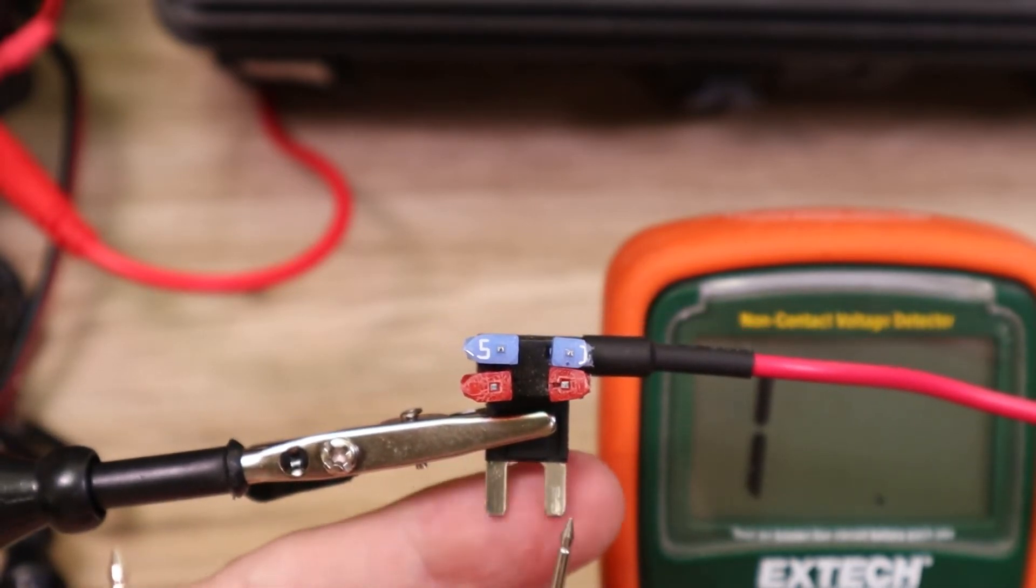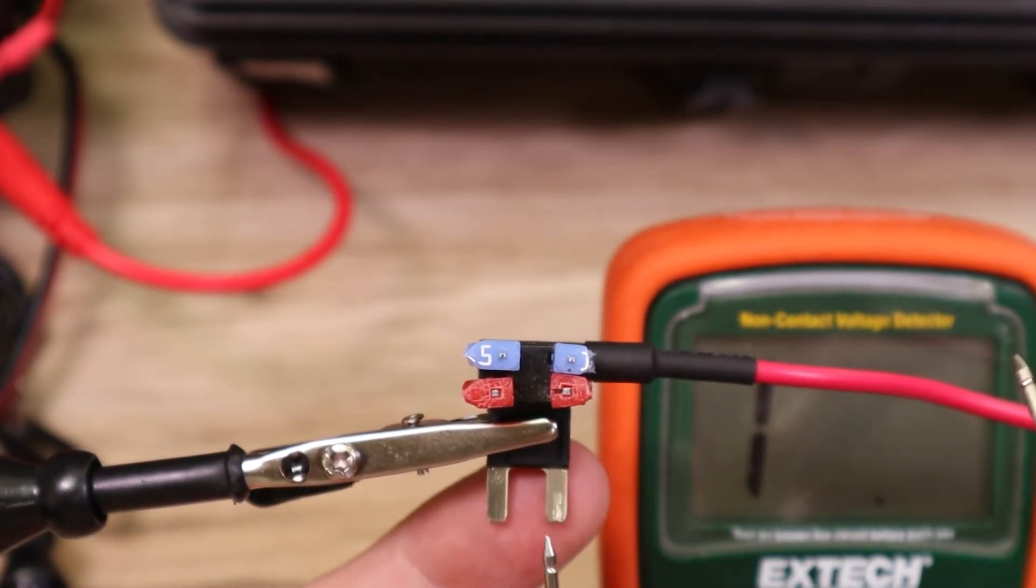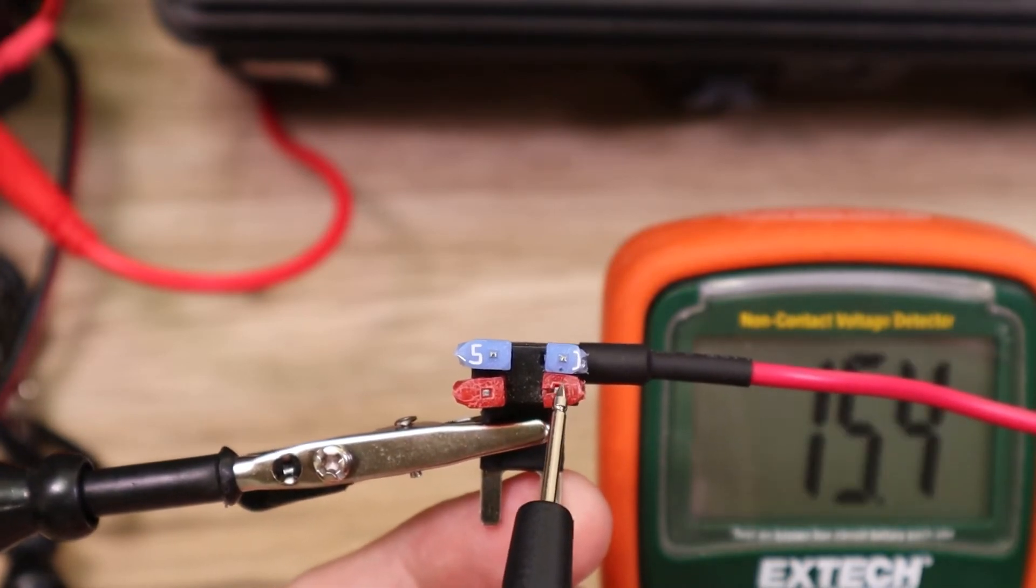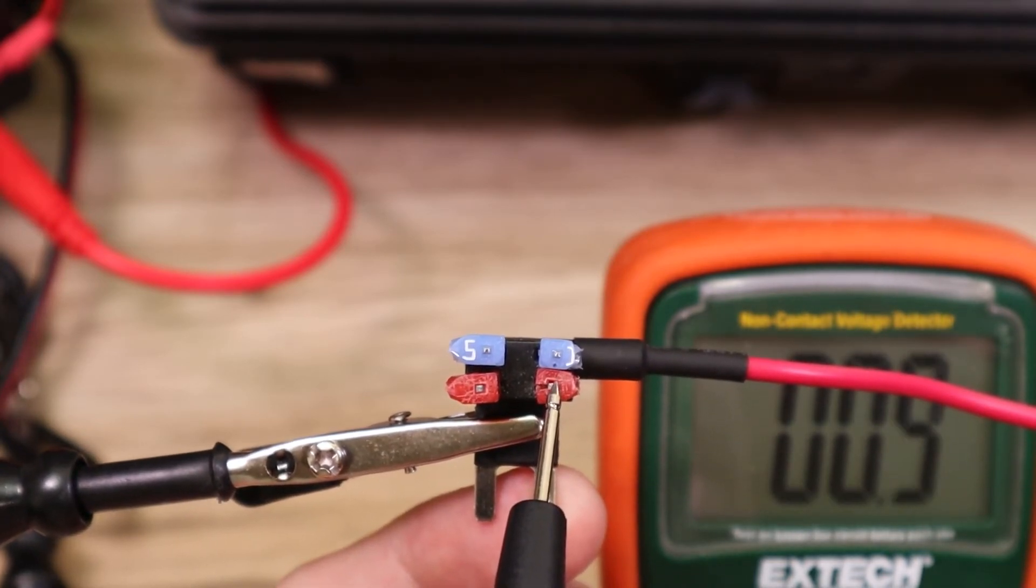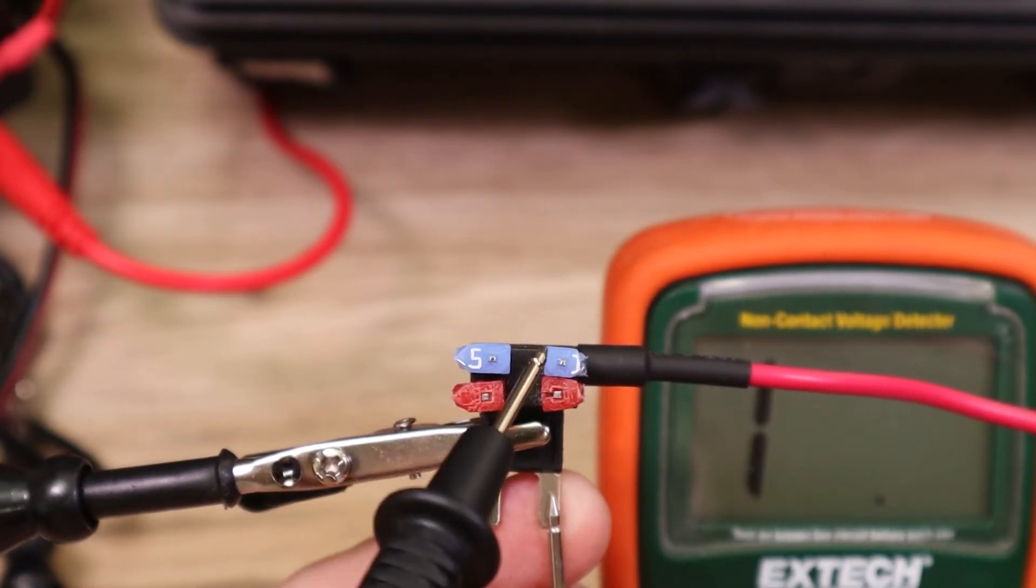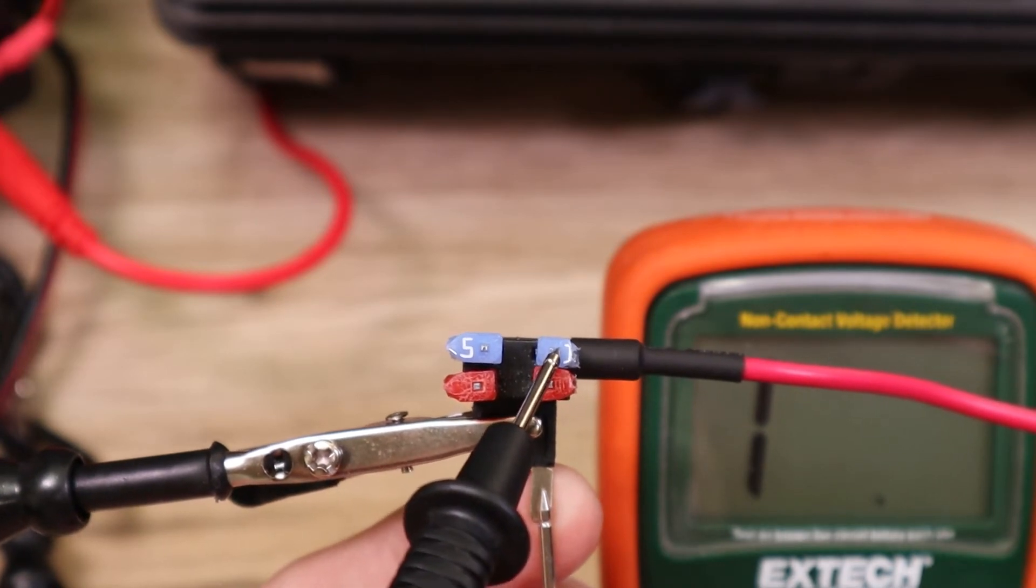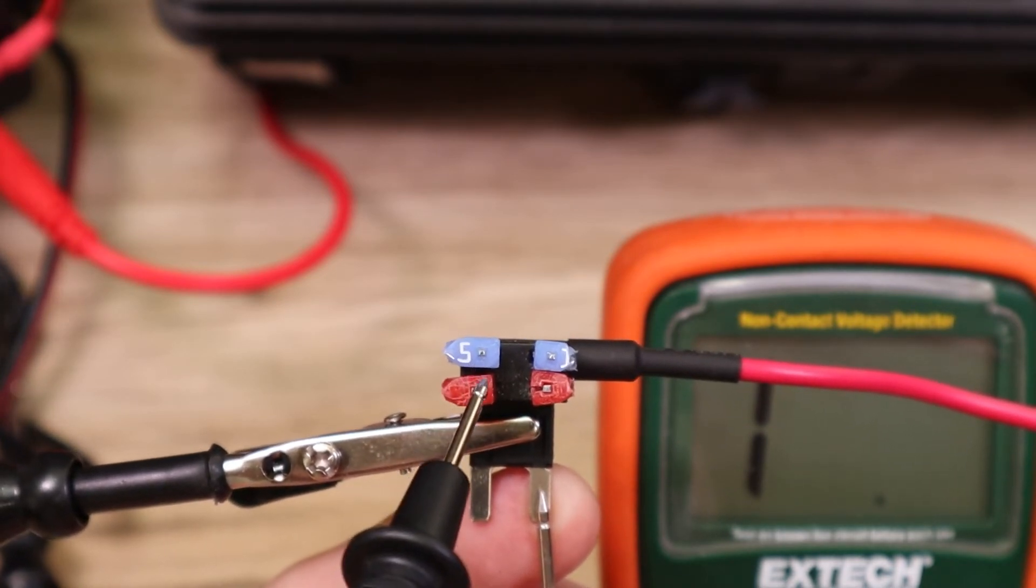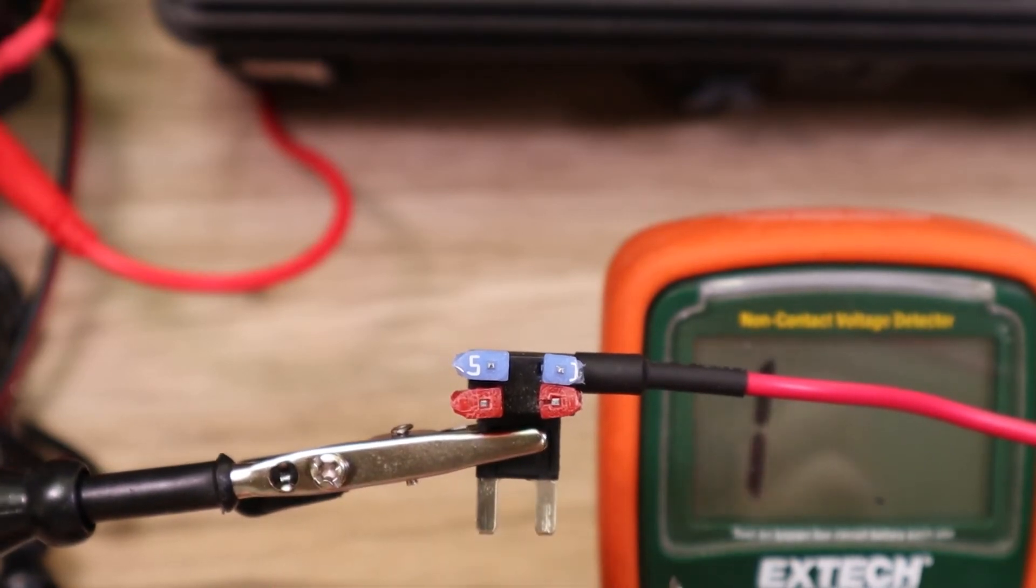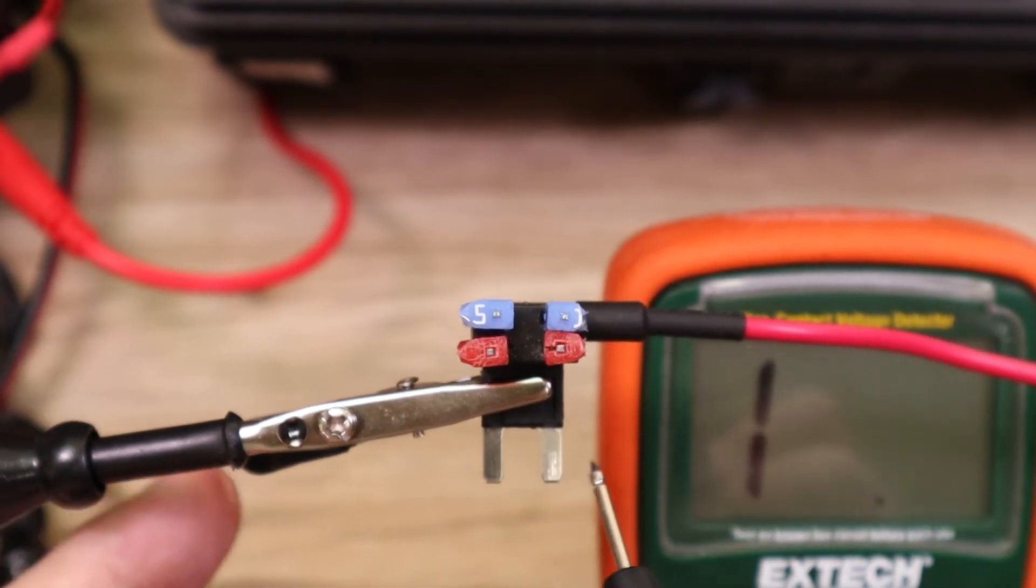So you can see that the left leg has continuity to the left sides of both fuse sockets in the fuse tab, whereas the right leg only has continuity to the lower right fuse socket. You can see there's continuity there, but there's no continuity to the upper or the other side of that same fuse socket.